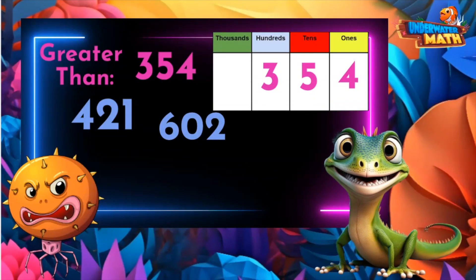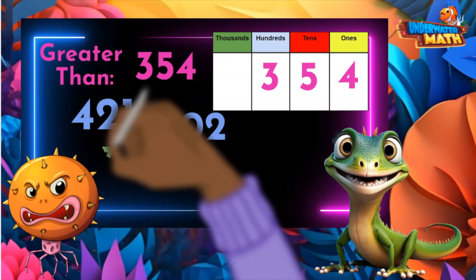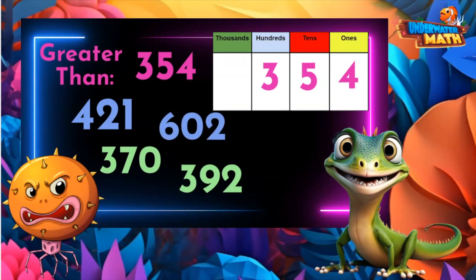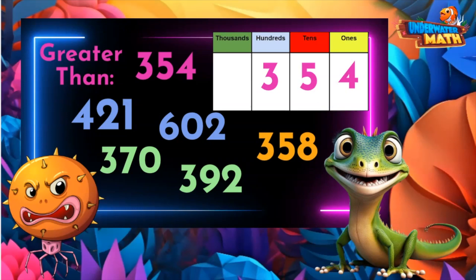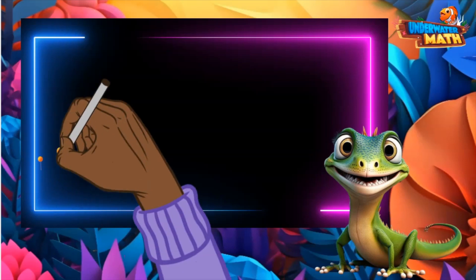They both have digits greater than three in the hundreds place. But also check this out — if the number has a three in the hundreds, it can still be greater than 354 if the digit in the tens place is greater than five, like 370 and 392. And wait, a number can be greater than 354 if it has three hundreds, five tens, but more ones than four — like 358. All of these numbers are greater than 354.